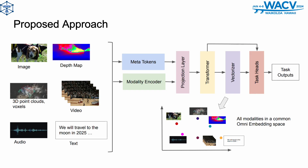This is the overview of the proposed approach. The network comprises six building blocks: modality encoder, meta token block, projection block, transformer, vectorizer, and task heads. We now explain each block in detail.